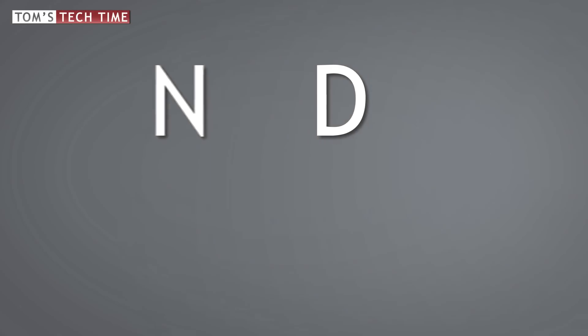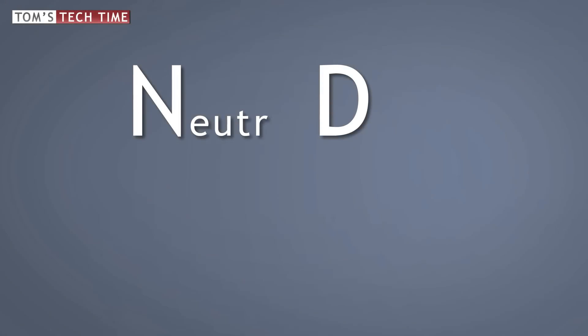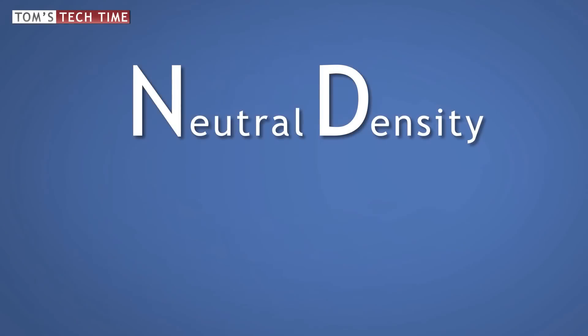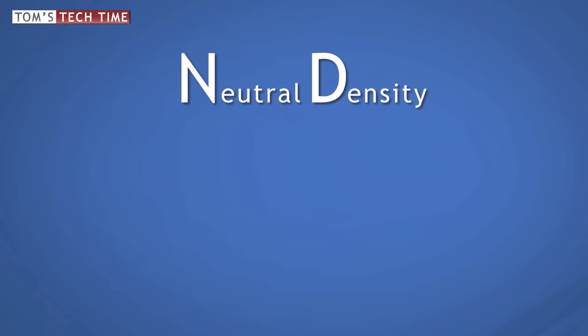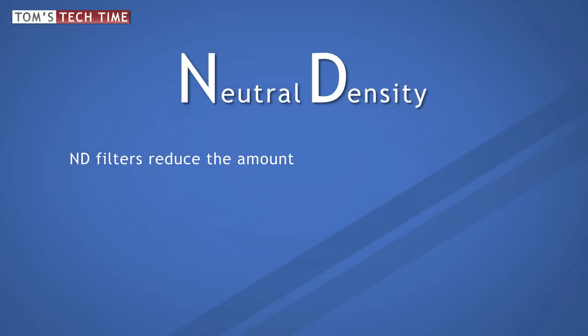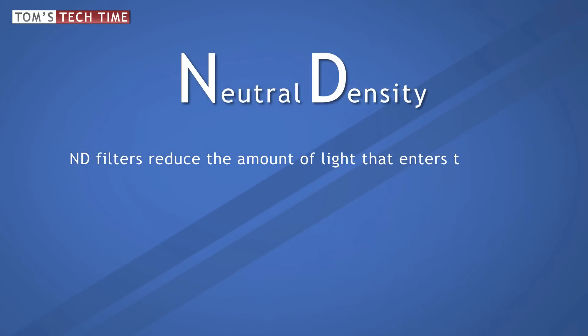ND stands for neutral density. ND filters are nothing but very clear sunglasses for our optics. Once an ND filter is installed in front of a lens, it reduces the amount of light entering the lens.